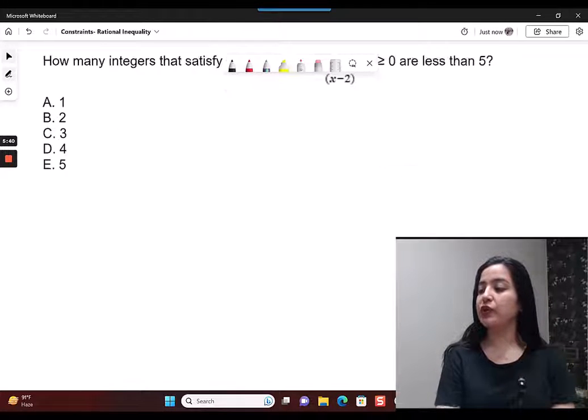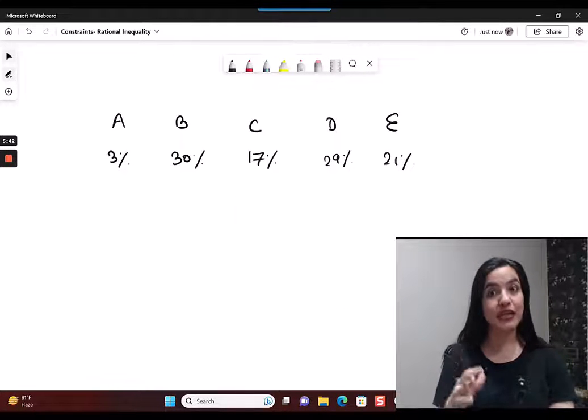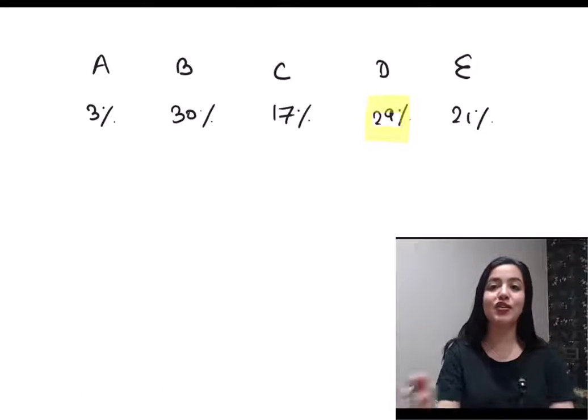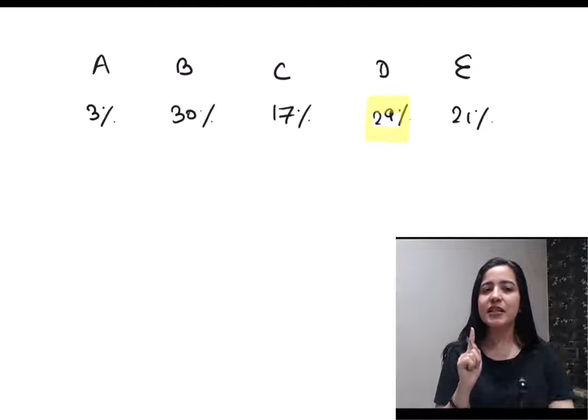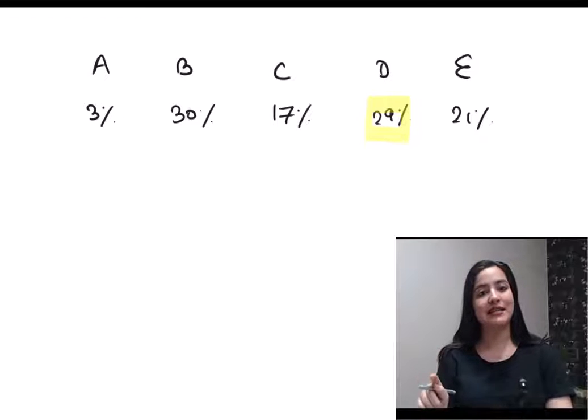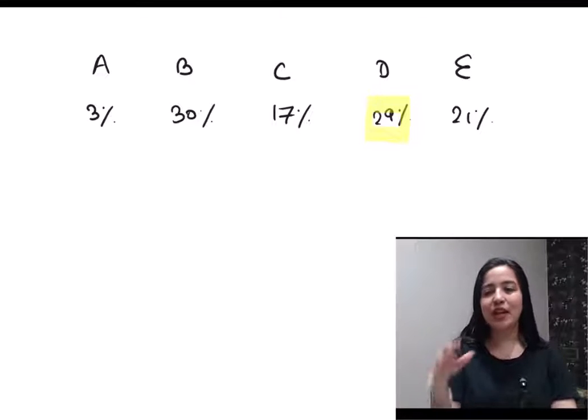Let me show you the accuracy data here, the choices and the percentage of people that marked each choice. The correct answer here is choice D. Just about 30% people got this correct, so this clearly is an uber difficult question. But it's not just difficult because of the difficult concept it tests. What difficult concept? The concept here in this question is solving a quadratic inequality.